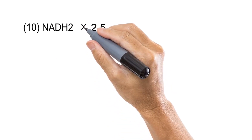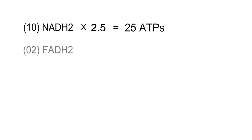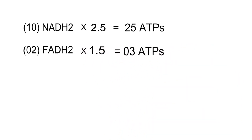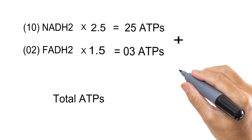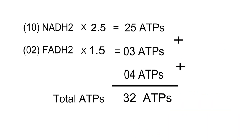In total we have 10 NADH2 molecules. From one NADH2 we get 2.5 ATPs, so from 10 NADH2 molecules we get 10 × 2.5 = 25 ATPs. We have 2 FADH2 molecules; from one FADH2 we get 1.5 ATPs, so from two FADH2 we get 2 × 1.5 = 3 ATPs. Total ATPs = 25 + 3 + 4 = 32 ATPs from the complete oxidation of glucose.